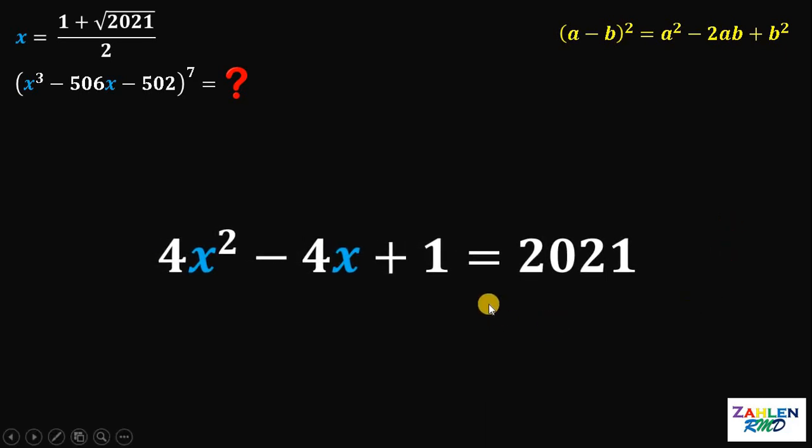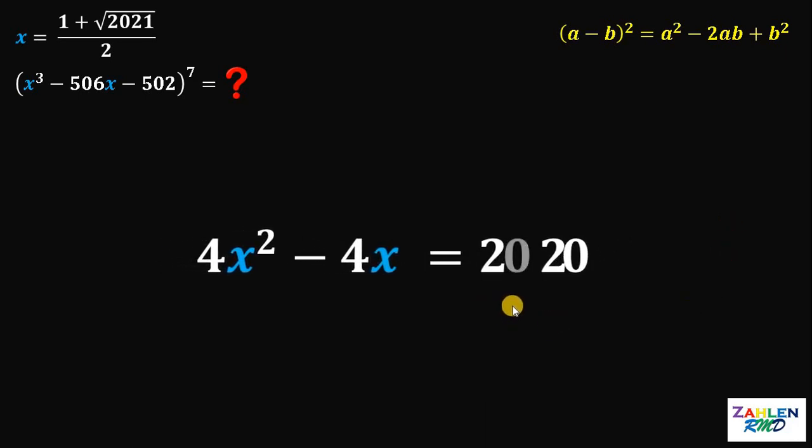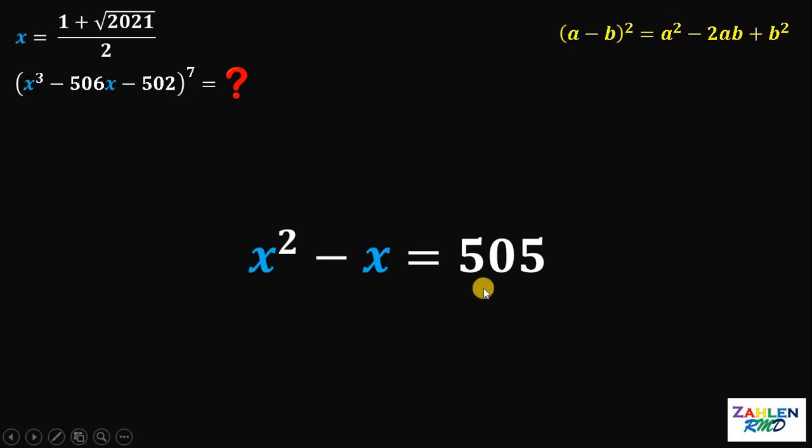Now, subtract 1 on both sides. This will give us 2020 on the right-hand side. And then, notice that 2020 is divisible by 4. Now, divide all terms by 4. This will give us x squared minus x equals 505. Now, let's set aside this result for a while.